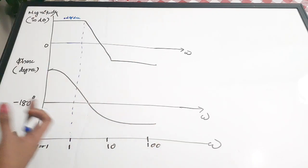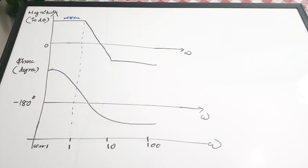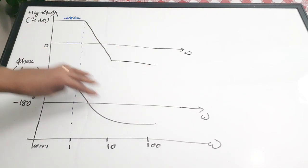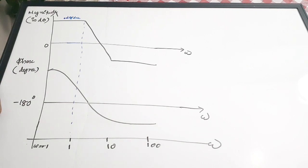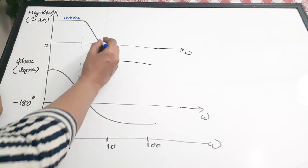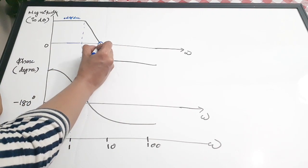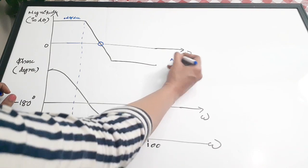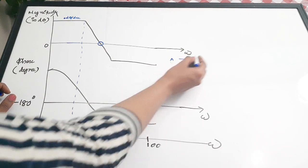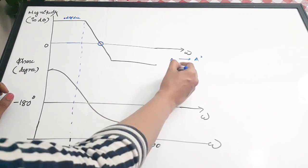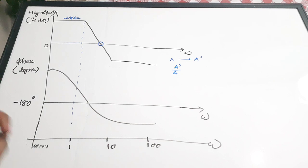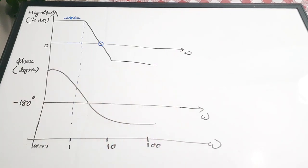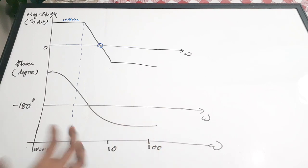The slope could be minus 20 dB or minus 40 dB per decade, and so on. So this is the magnitude plot and this is the phase plot. Now, gain represents the change in magnitude — if your input signal has magnitude A and your output has magnitude A dash, then the ratio A dash over A is the gain.